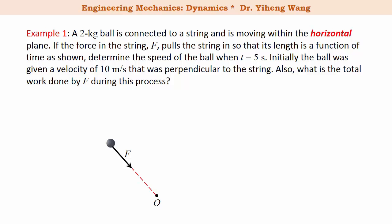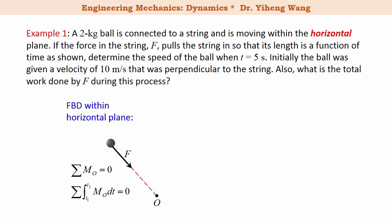Since the particle moves only within the horizontal plane, we do not need to consider the weight force or the support force. In the free body diagram of the ball within the horizontal plane, the force within the string is the only force to consider. Since the line of action of this force always passes through point O, the resultant moment about point O is always zero. Therefore the angular impulse about point O is also always zero, and we can apply the conservation of angular momentum: the ball's angular momentum about O at t1 equals its angular momentum about O at t2.